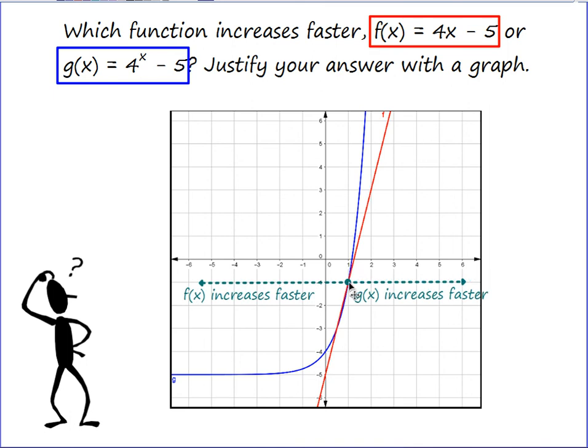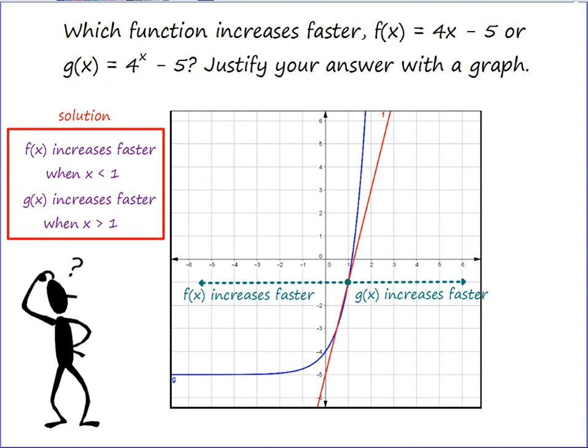From this point where the two lines meet, if I look to the left of that point, it's actually f(x) that's steeper. It has a greater positive slope. But if I look to the right of that point, g(x) takes over and starts to increase at a faster rate or has a greater slope. So I have two answers and I can write them both down. f(x) increases faster when x is less than 1, but g(x) increases faster when x is greater than 1.